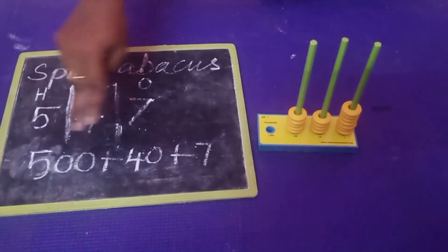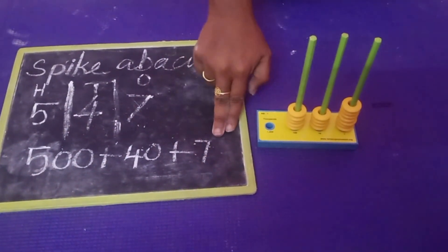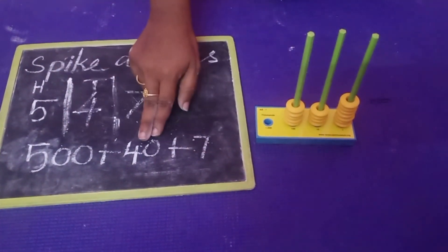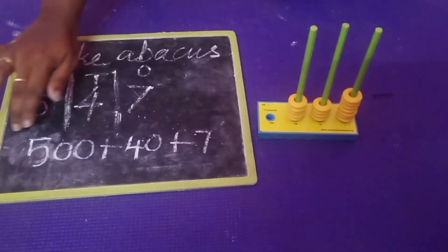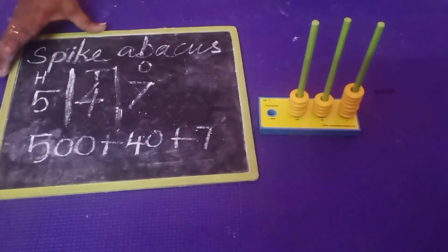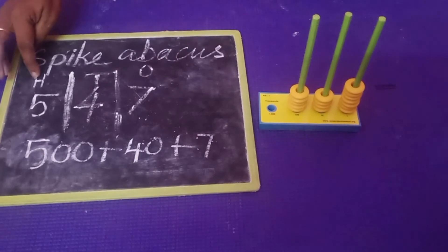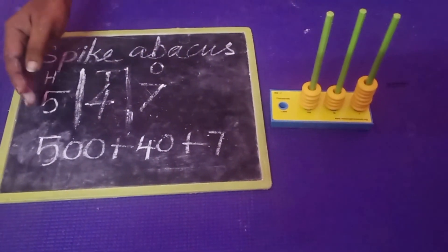There are 5 hundreds, 4 tens, and 7 ones. So 500 plus 40 plus 7. This is the expanded form for this number. In a spike abacus, first you have to write the place values, then you fix your spikes.